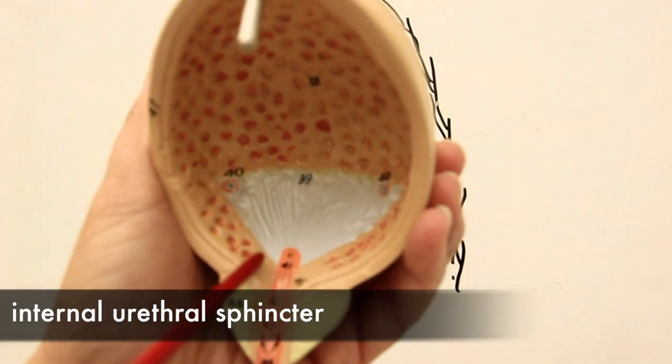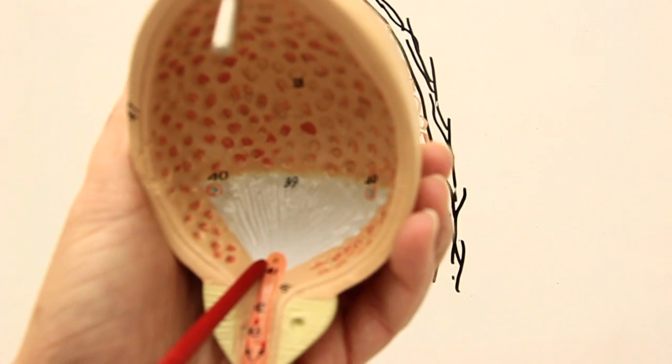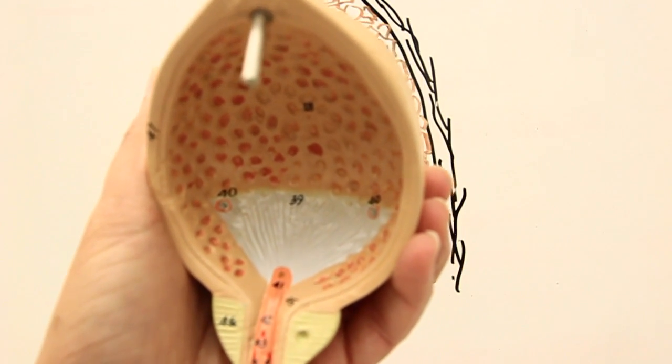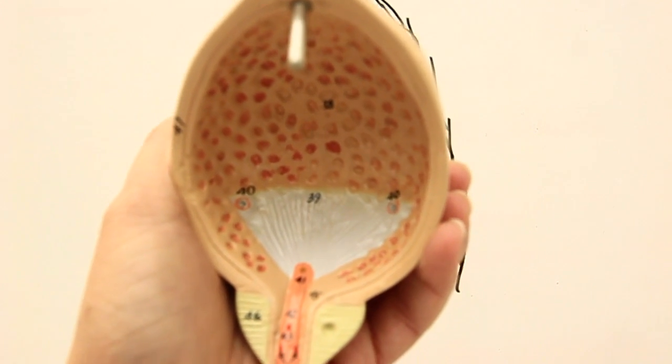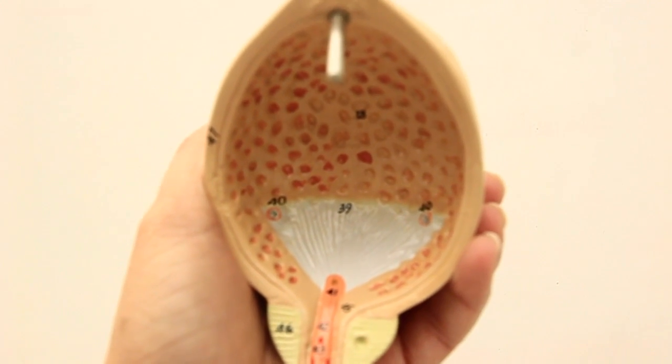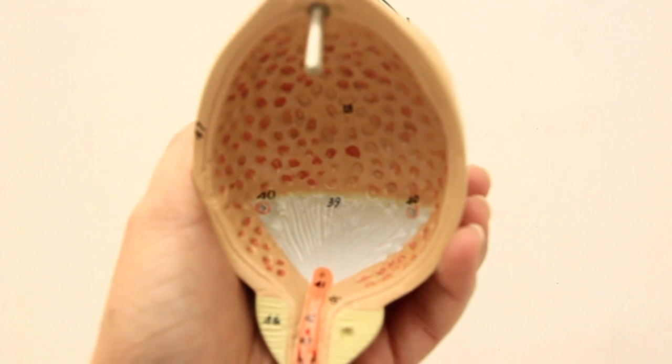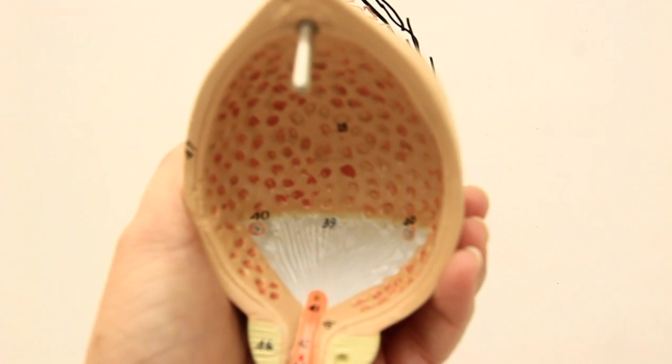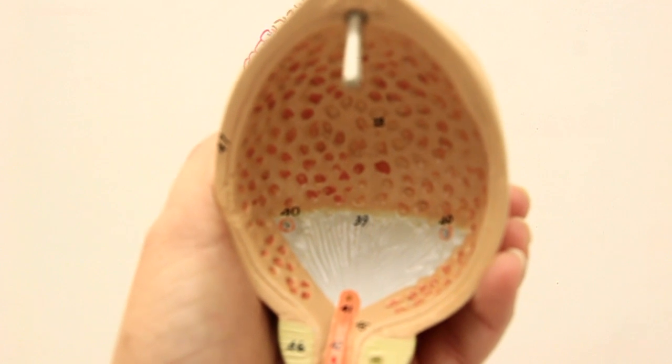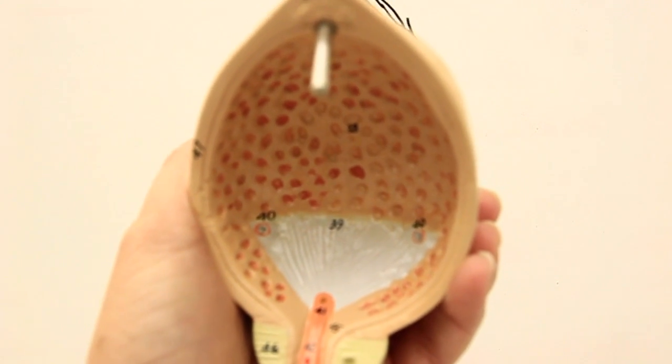As I mentioned, the bladder is a hollow, muscular, highly expansile organ. Its wall is very thick, formed by thick layers of muscles. What type of muscle? Smooth muscle.